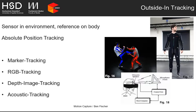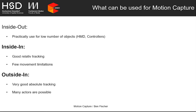Acoustic tracking works with one speaker and three microphones using time-of-flight — very cheap with no mechanical parts, but the least precise and with a low sampling rate. For body tracking, inside-out tracking is rarely used because it's only practical for a low number of objects. Most body tracking systems use inside-in tracking for good relative precision with few movement limitations, or outside-in tracking for very good absolute tracking that can handle many actors at once.